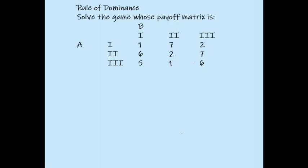Let us check whether this matrix has a saddle point or not. We find the row minimum and column maximum. The row minimum for the first row is 1, for the second row it is 2, and for the third row it is 1. The column maximum for the first column is 6, for the second column is 7, and for the third column is 7.